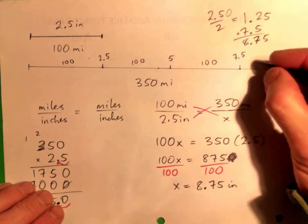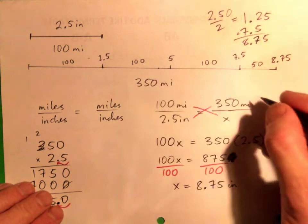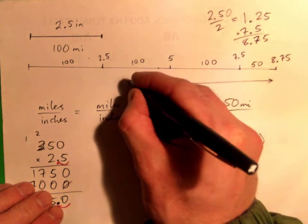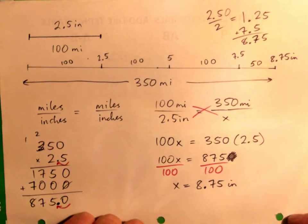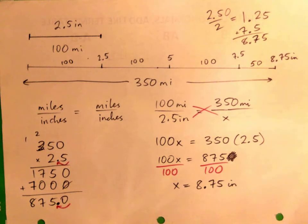100 miles, 100 miles, 100 miles, 50 miles. So that's how it looks like as well. That's, 350 miles is 8.75 inches, right? But yeah, that's solving it with a proportion. Perfect.